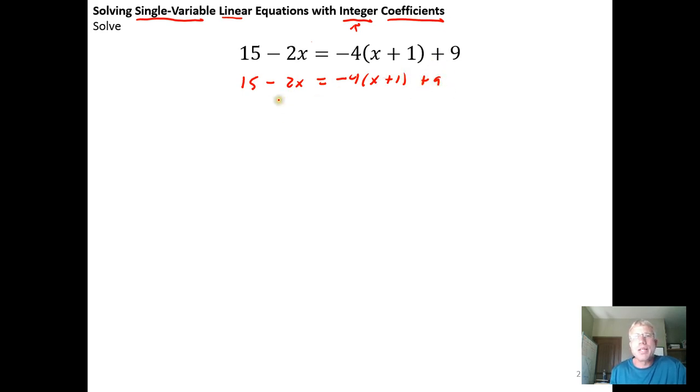There are several things that I could do from here that would be correct. But what I would usually do in this case is go ahead and take care of this right here. I would do the distribution. We have negative 4 times x plus 1, a binomial in parentheses. So I'm going to take the left-hand side and bring it down. And then I'm going to do negative 4 times x is negative 4x. And I have a negative 4 times a plus 1 is a minus 4. And bring down the plus 9.